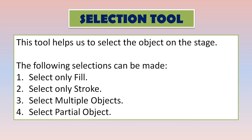The first type of selection is select only fill — meaning you select only the inner filled portion of the object, the color or texture filled inside it. The second type is select only stroke, where you select only the outline of the object. The third type is select multiple objects — if you have two objects and want to select both at once, you select more than one object at a time. And the last is select partial object, where you select only a portion of an object rather than the complete object.